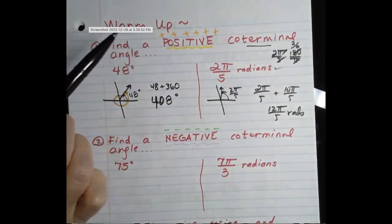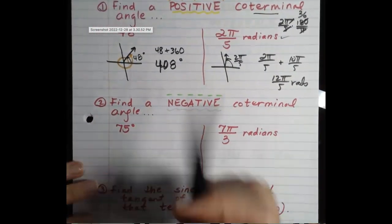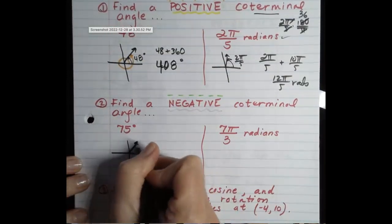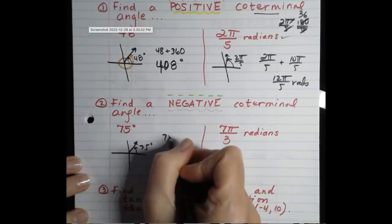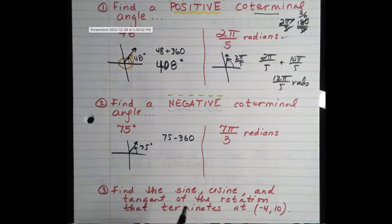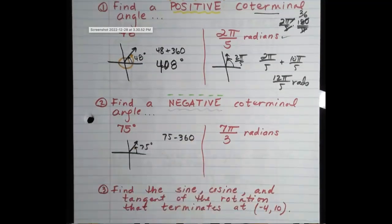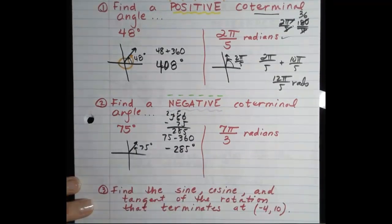So the positive coterminal angle is 12π over 5 radians. Those are both positive coterminal angles. Now let's take a look at the negative ones. 75 degrees is going to be about right there. If we want a negative coterminal angle, instead of adding 360, we subtract 360. So 75 minus 360 is negative 285.